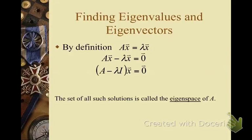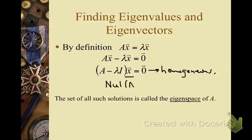To find the eigenvectors x, all we need to do is solve the homogeneous linear system (A minus lambda I)x equals 0. Notice that this looks a lot like the null space of a matrix — except it is the null space of A minus lambda I. The solutions to this linear system are called the eigenspace of A, and the eigenspace is simply the null space of A minus lambda I.